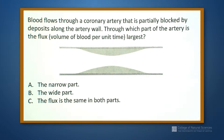This question says that we have blood flowing through a coronary artery that is partially blocked by deposits along the artery wall. Through which part of the artery is the flux — the volume of blood per unit time — the largest?